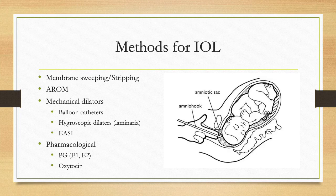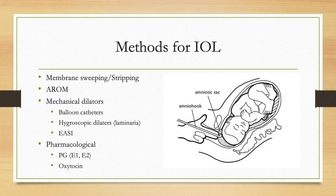Methods for induction of labour include membrane sweeping and stripping, which in some literature does not fall under formal induction; artificial rupture of membranes; mechanical dilators including balloon catheters — single and double balloons; hygroscopic dilators such as laminaria; extra-amniotic saline infusion; as well as pharmacological preparations such as prostaglandins E1, prostaglandins E2, and oxytocin.